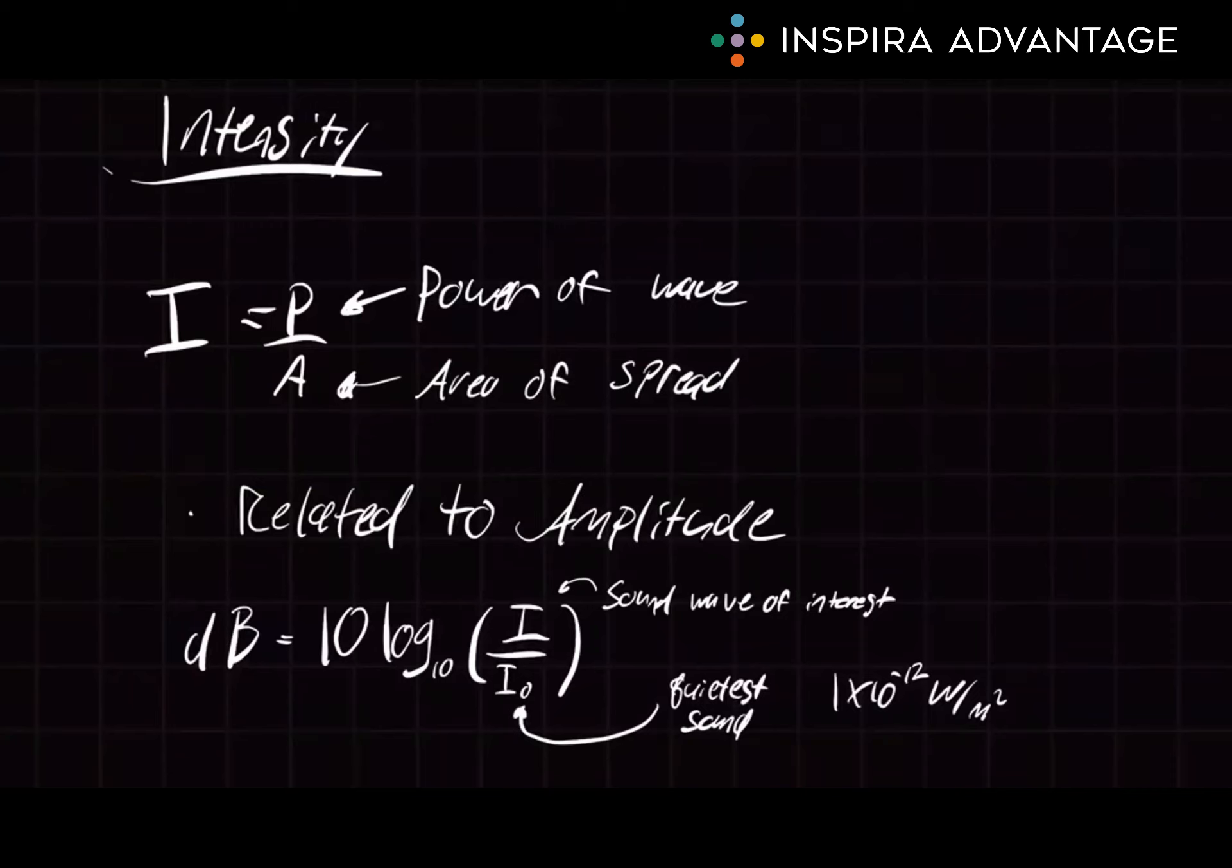Another incredibly high-yield thing the MCAT is going to test when it comes to intensity are decibels. These are used to measure sound intensity in a way that accounts for the logarithmic nature of human hearing. The equation to convert sound intensity into decibels is dB, or sometimes L, equals 10 times log base 10 of I, the sound of the wave of interest, divided by I0, which is the quietest sound a human can perceive, which happens to be 1 times 10 to the negative 12 watts per meter squared. It's low yield, so I actually would recommend memorizing that number.